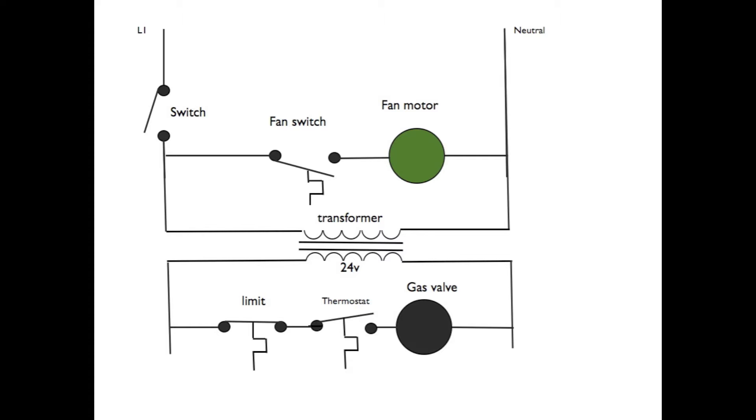Now, why do we use a 24-volt circuit? Because 24 volts is low enough that you're probably not going to get electrocuted off of it. The wiring can be lighter, and the controls are more accurate.